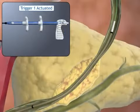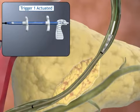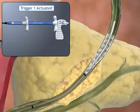The first trigger on the handle is slowly actuated to begin stent deployment. The outer sheath of the catheter will retract as the stent is deployed.